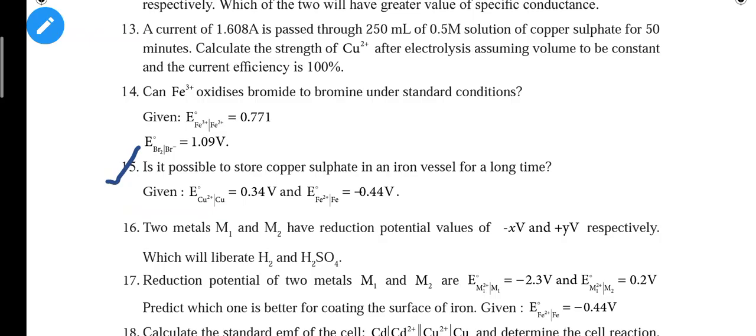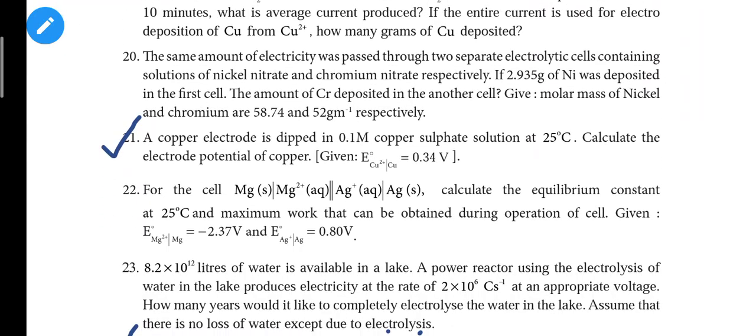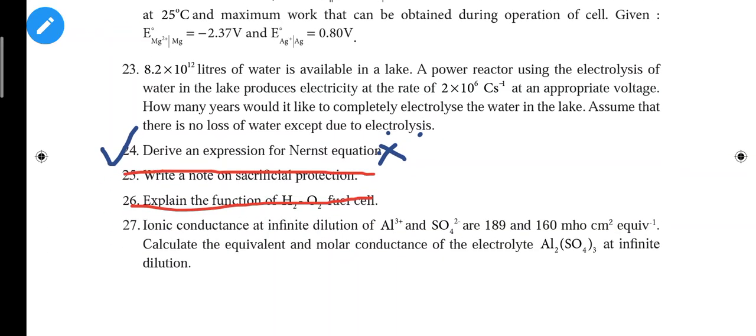Fifteenth question: Is it possible to store copper sulfate in an iron vessel for a long time? Twenty-first question: A copper electrode is dipped in 0.1 molarity copper sulfate solution at 25 degrees centigrade, calculate the electrode potential of copper. Question 24 is very important, five marks or three marks: Derive an expression for Nernst equation. The Nernst equation is a very important book back question.